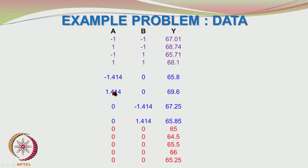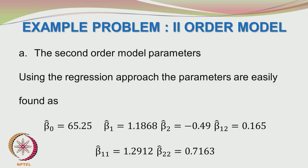The axial points correspond to alpha values of minus root 2 and plus root 2 for factor A, and minus root 2 and plus root 2 corresponding to the axis for factor B. These are the responses. You are also given the repeats at the center — there are 5 repeats. You have 4 factorial plus 4 axial = 8, plus 1 center setting = 9 independent settings. The total number of experiments is 13.